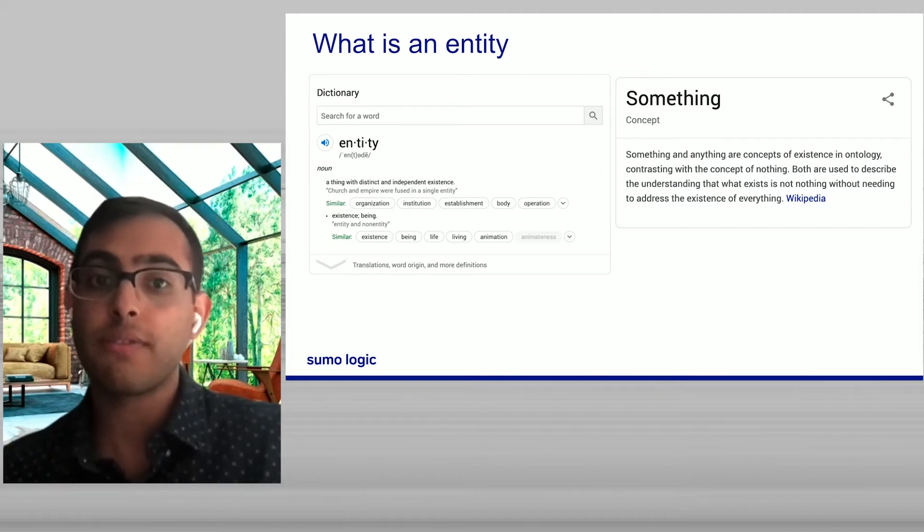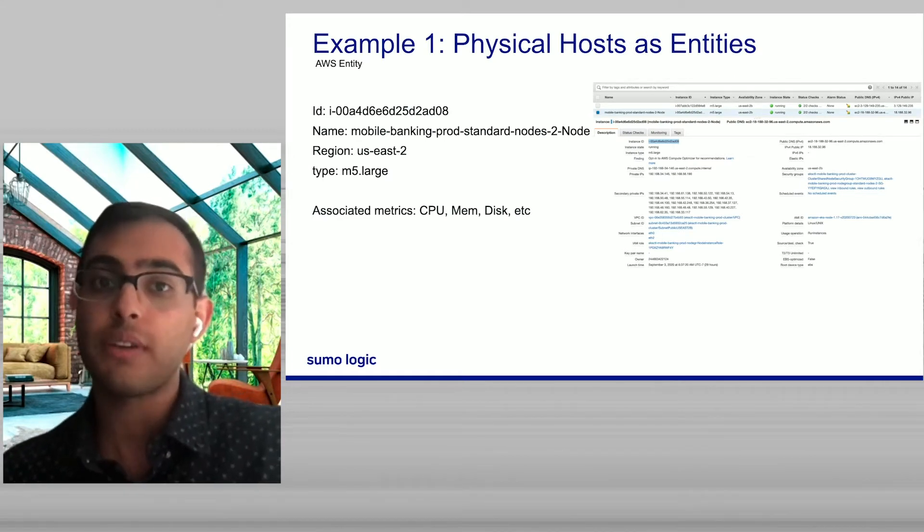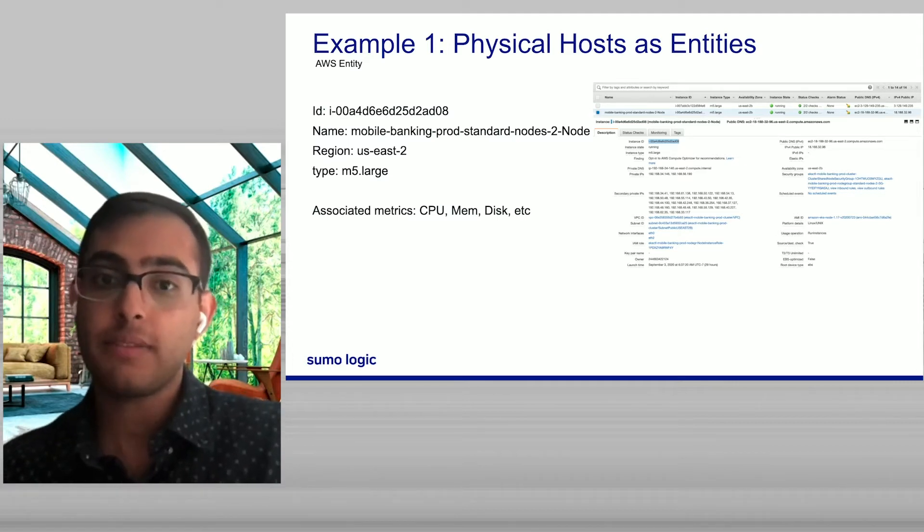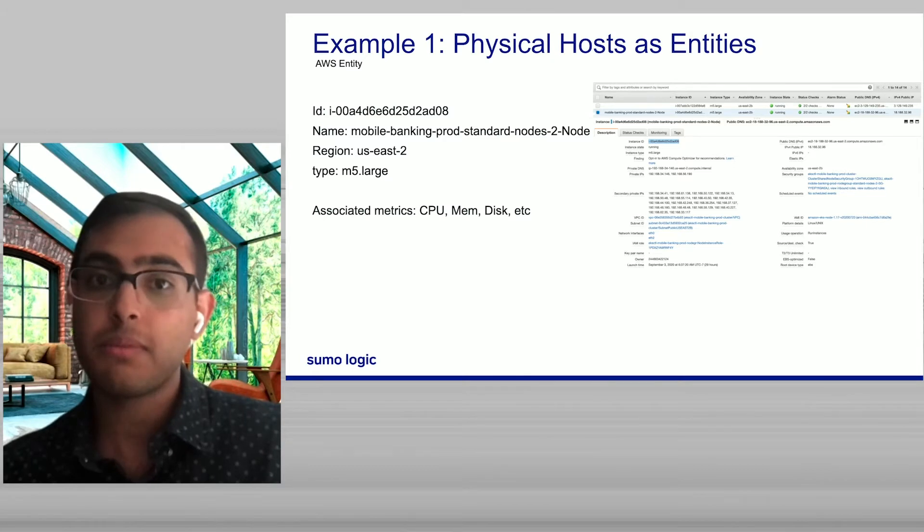So the first thing we looked at here is a physical host. In AWS, we've got this physical host definition. What does that look like as an entity? In AWS, we have this panel, this kind of interface that enables us to see these hosts and their properties. We get things like their ID, their name, the region, the type, certain associated metrics like CPU, mem, disk. And these all kind of bound this entity inside of AWS. This is what allows us to reason about and understand the behavior or the configuration for this given host.